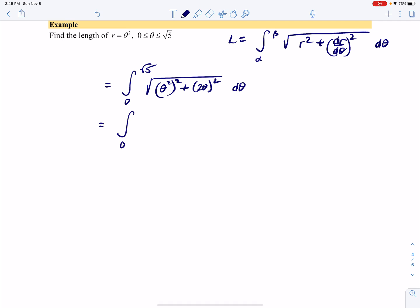Multiplying out, we have the square root of θ⁴ + 4θ². That's just θ² + 2, right? No, it's not.